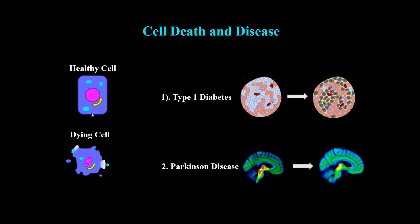For example, in type 1 diabetes the beta cells of the pancreas are destroyed, and in Parkinson's disease the dopamine-producing neurons in our brain are destroyed. There are too many other examples in which particular cells are dying. But the good news is that we are now living in a very modern world and scientists are busy developing advanced therapeutic approaches to deal with such chronic diseases.